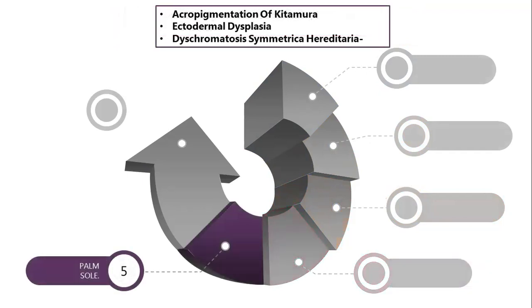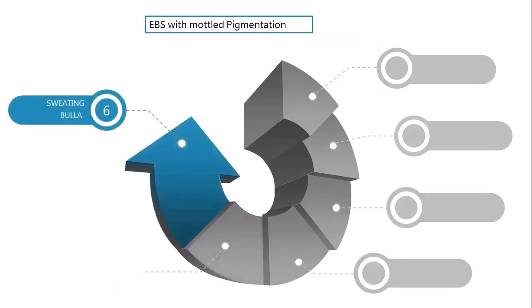The next thing you should look at is involvement of palm and soles. Quite a few of them have got acral involvement and some of them are localized just there — for example, the Kitamura variant of acral pigmentation and macular hydratia. Then you have the last unusual thing, like patients who've got sweating-associated defects or who have bulla appearing, which is classically EBS with mottled pigmentation — good to know the morphological term for it.